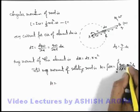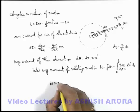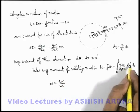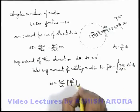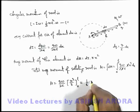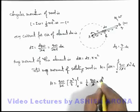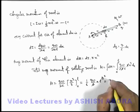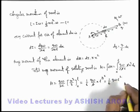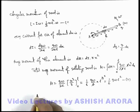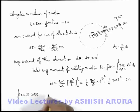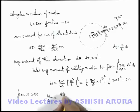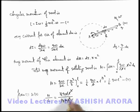Here π cancels out. So M = (qω/2l) · [x³/3] from 0 to l, giving M = (1/6)qωl² — call this equation 2. Now finding the ratio from equations 1 and 2: M/L = (1/6)qωl²) / ((1/3)ml²ω). Here ωl² cancels, and 3 also cancels, giving us q/2m — the same result as before.